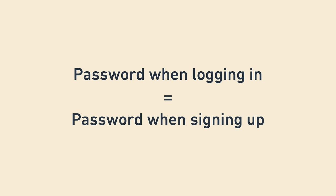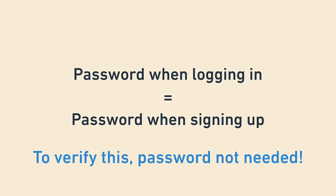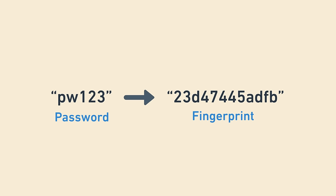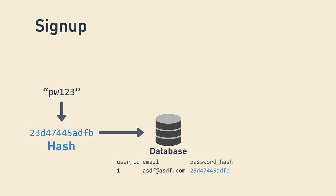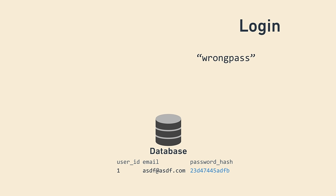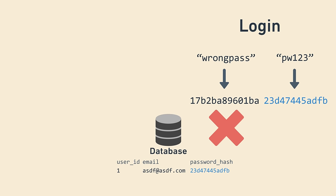The key insight is that we only need to know when the user types in the same password as when they signed up — we don't actually need to know the password itself. It's possible to take a password and generate a fingerprint from it, which will let us know if we encounter the same password in the future, but still be unable to recover the password directly from the fingerprint. This technique is known as hashing. When the user signs up, we take the password they provide, generate a small fingerprint or hash, and store it instead of the actual password. When the user tries to log in, we run the same hashing process and see if the output hashes match. If the hashes are the same, it's overwhelmingly likely that they typed in the correct password.